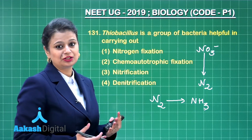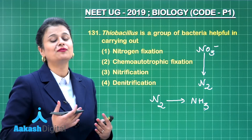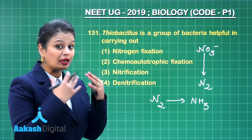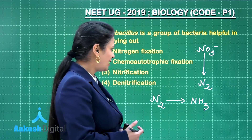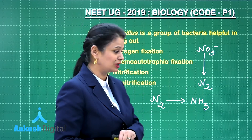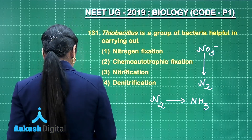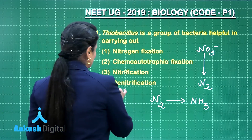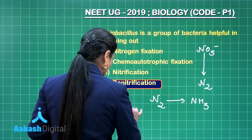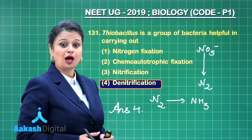Nitrification — nitrification is the conversion of ammonia into nitrite and nitrate, but here we are talking about the process in which nitrate is changed into molecular nitrogen. The last option, denitrification — yes, this is the correct one associated with Thiobacillus. So our right answer is option number four.